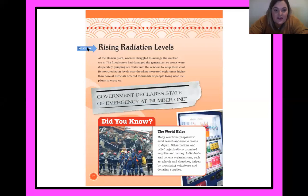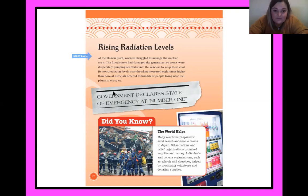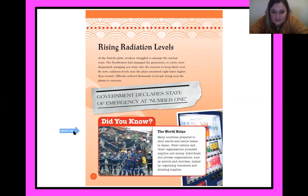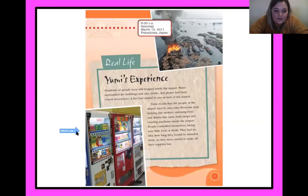Rising radiation levels at the Daichi plant — workers struggled to manage the nuclear crisis. The floodwaters had damaged the generators, so crews were desperately pumping seawater into the reactors to keep them cool. Radiation levels near the plant measured eight times higher than normal. Officials ordered thousands of people to evacuate. A headline reads: 'Government declares state of emergency.' Many countries sent search-and-rescue teams to Japan, and other nations promised supplies and money. Schools and churches helped by organizing volunteers and donating supplies. Meanwhile, hundreds of people were trapped inside the airport.